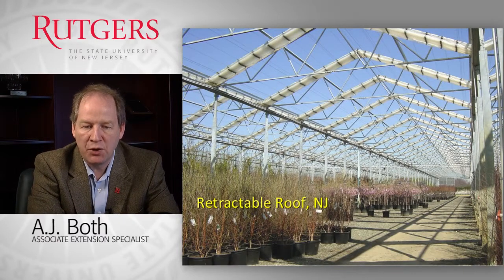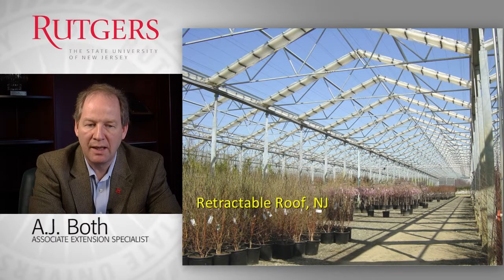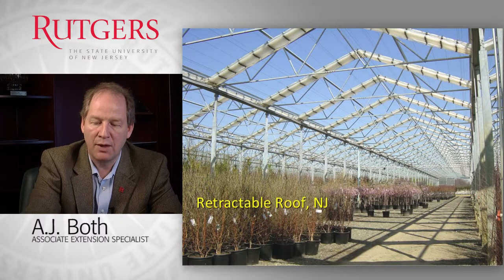Another open type structure is a retractable roof design. It is a cloth-like material that is retracted most of the time except during cold weather or heavy precipitation events, when it can be closed to protect the crop underneath. Here you see a system like this used at a nursery where the plants are most of the time perfectly happy being exposed to the outside environment, but under more extreme conditions like heavy precipitation or colder temperatures, this structure is used to protect the plants throughout the winter period.